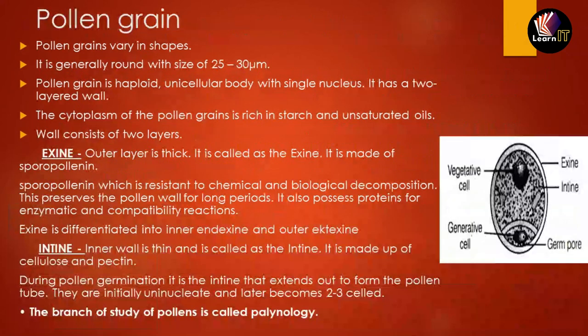Now let us discuss pollen grains in detail — their size, shape, and structure. Pollen grains come in different shapes and sizes, with a typical size of 25 to 30 micrometers. A pollen grain is haploid and unicellular, with a single nucleus, divided into two layers. The cytoplasm inside is rich in starch and unsaturated oils. The wall consists of two parts: the outer exine and the inner intine.